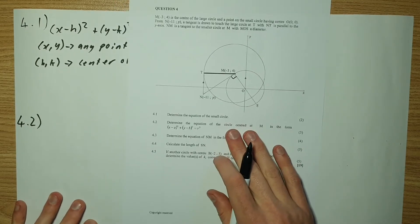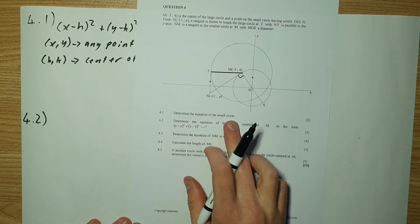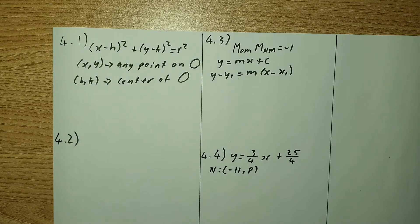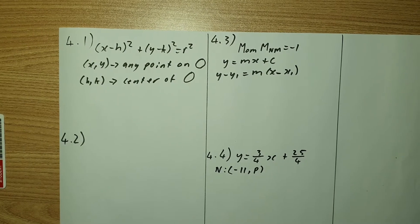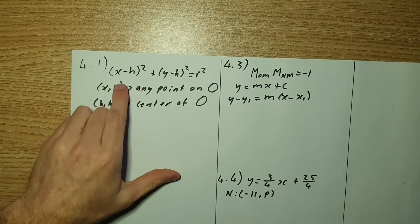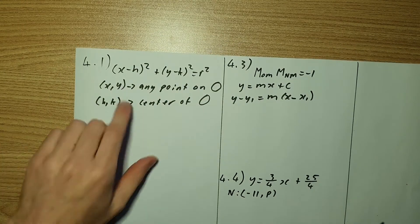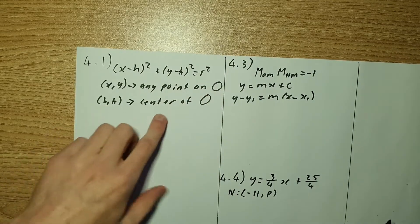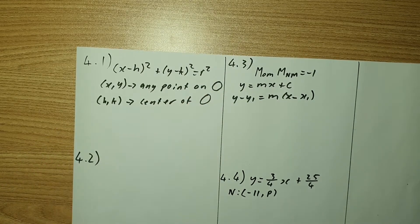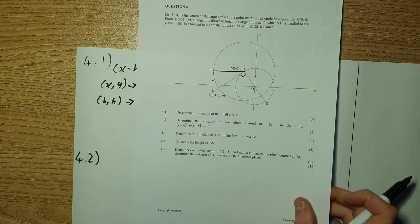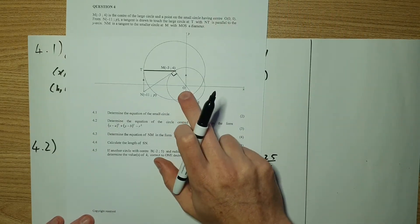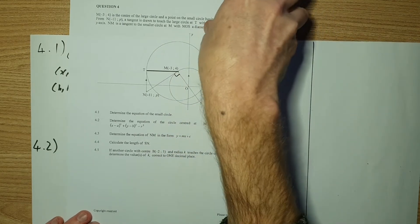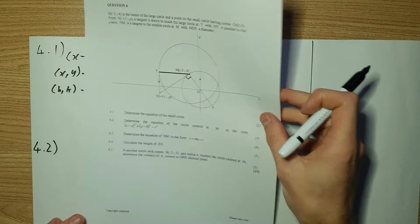So 4.1 says determine the equation of the small circle. Here's the equation given at the top for a circle. Remember that x and y is any point on the circle and h and k is the center. Looking at our picture, the center of the circle is at 0, 0 and the point given on the circle is negative 3 and 4. So we can plug that in and solve our equation.